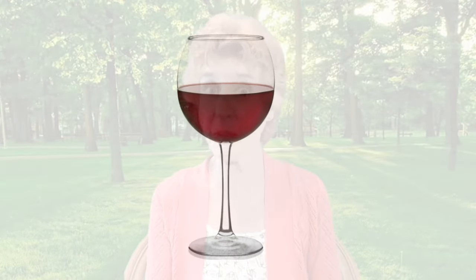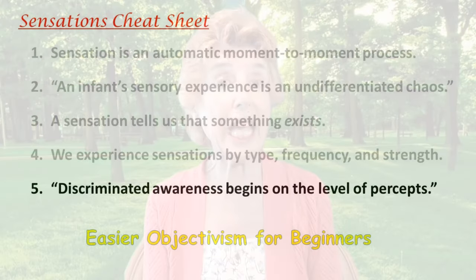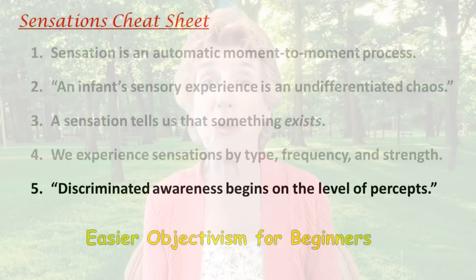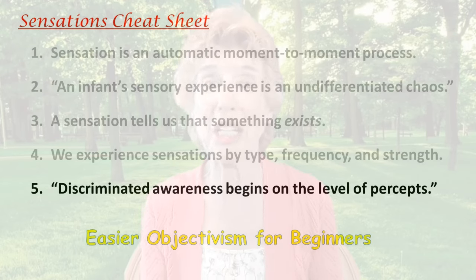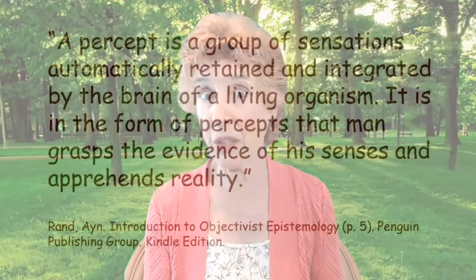We're diving into Ayn Rand's introduction to objectivist epistemology. Sensing things will move us from sensations to percepts. In video four, we used a picture of a glass of wine to introspect. We ended our sensations cheat sheet with Rand's statement: discriminated awareness begins on the level of percepts.